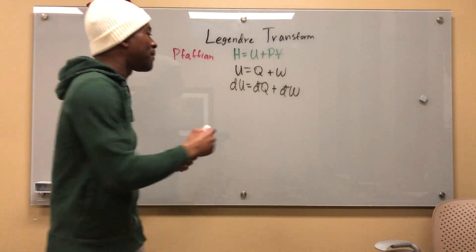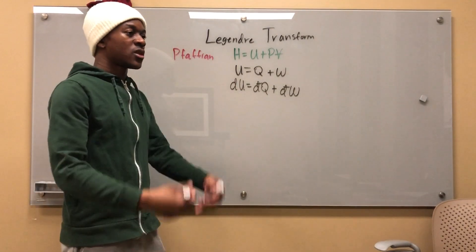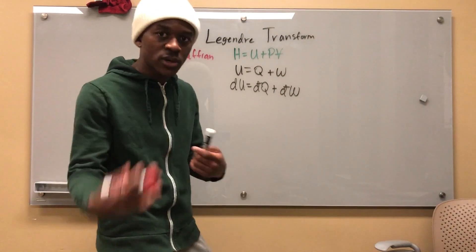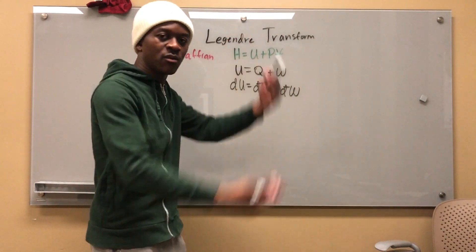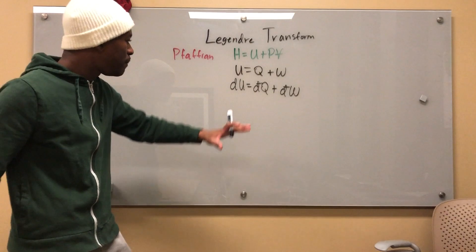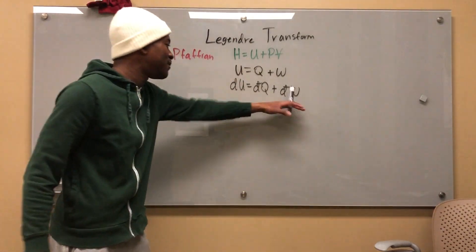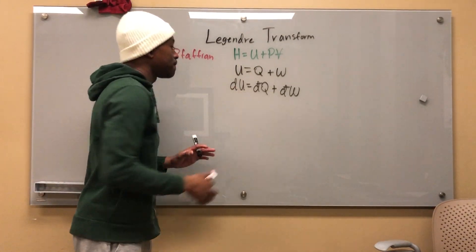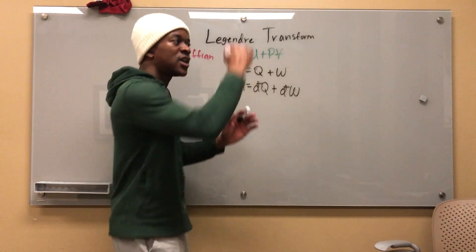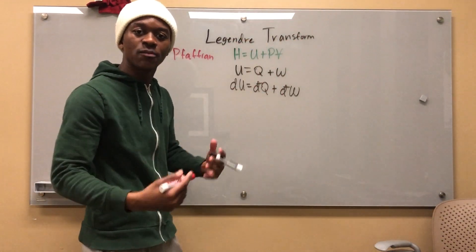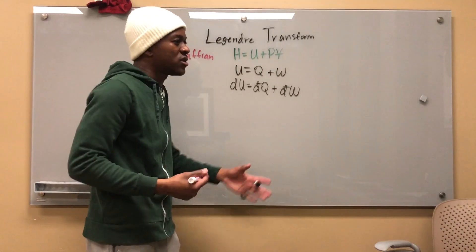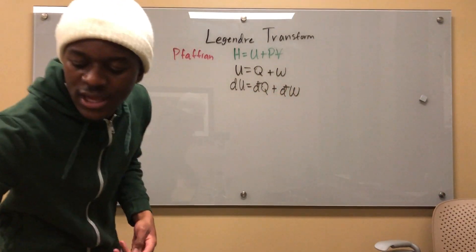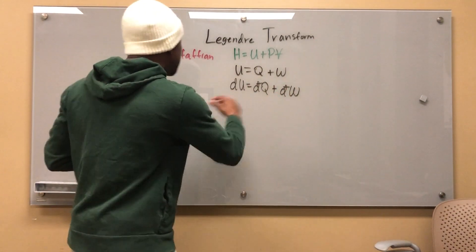This should basically mean that these are path dependent. The amount of work that you get out of something depends on the path that you take. And I'll go more into this on another video if I haven't already done so depending on where this video is in the playlist. But basically, these are path dependent. And this isn't. I can get my difference in U by taking my U at a certain point and subtracting it from my U at another point to get the difference. But you can't really do that with work. Work is sort of like a process. And I'll get into that in another video.